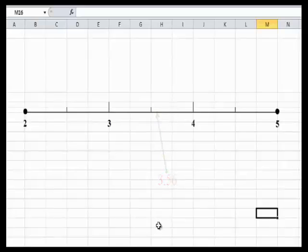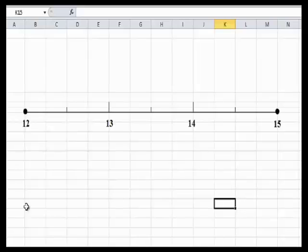Okay, let's look at another example. In this number line, I have 12 going all the way to 15. So if I'm using the example 12.05, I know this.